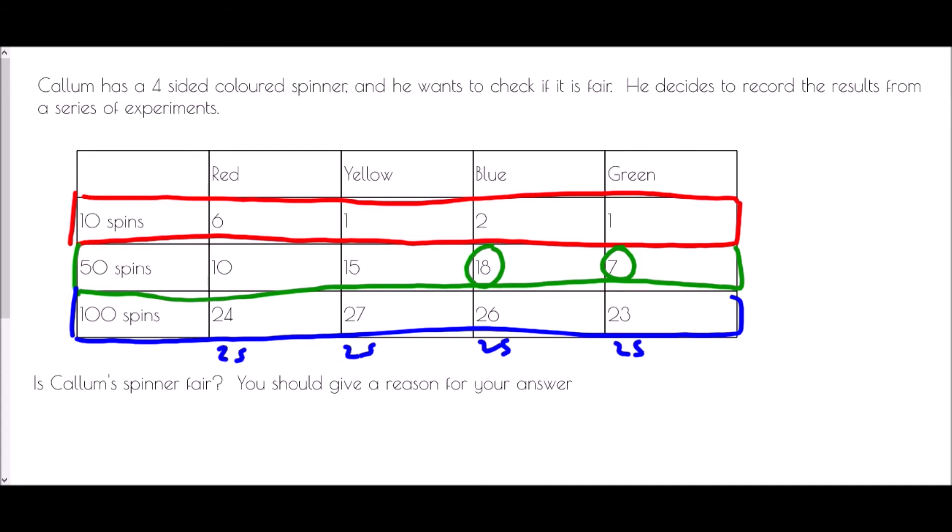Now with this, we haven't got exactly that coming out. But this is an experiment - it doesn't always go the way we think. But it is very, very close, and so that is suggesting that actually it is a fair spinner.